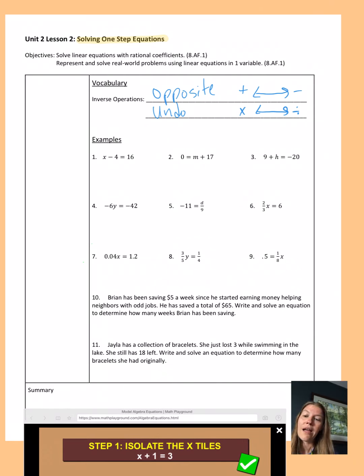So on number 1, I always want to isolate the variable, and my variable x is over here, so we've got to decide what is happening to my x. Well, it's being subtracted by 4, so the opposite, or to undo that, I need to add 4. And again, we want to keep this equation balanced. Think of that scale. So if I add 4 to one side, I have to add 4 to the other side as well. One's on the left and one's on the right of that equal sign.